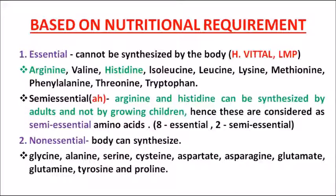In the mnemonic H VITAL LMP: H stands for histidine, V for valine, I for isoleucine, the two T's stand for threonine and tryptophan, A for arginine, L for lysine, M for methionine, and P for phenylalanine. Among these 10 essential amino acids, two are now reclassified as semi-essential amino acids — arginine and histidine.